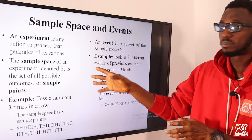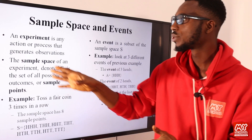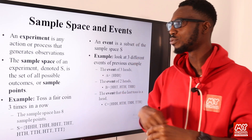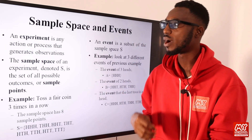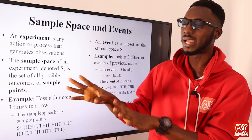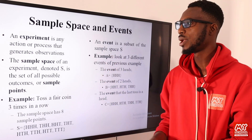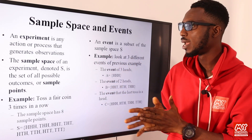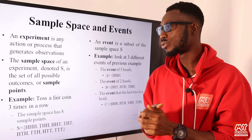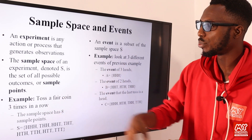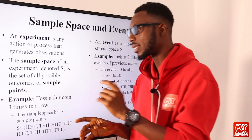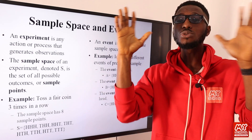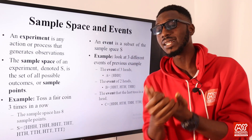An experiment is any action or process that generates observation. You want to generate observation and see things for yourself — you have to carry out an experiment, especially in sciences, and in mathematics as well. The sample space of an experiment is denoted S — it is the set of all possible outcomes or sample points. For example, if I toss a fair coin three times in a row, these are the possible outcomes. The list of all possible outcomes you can get is your sample space.